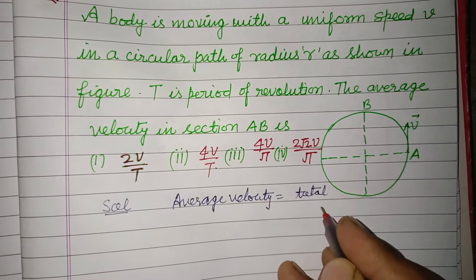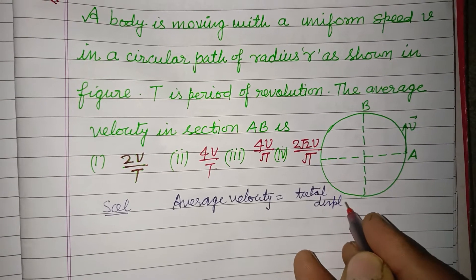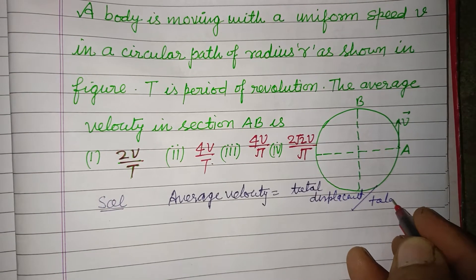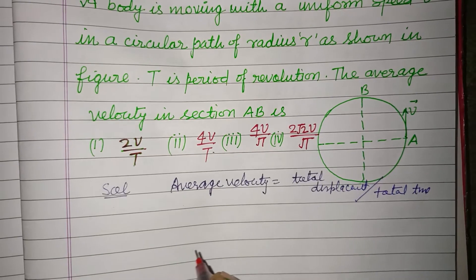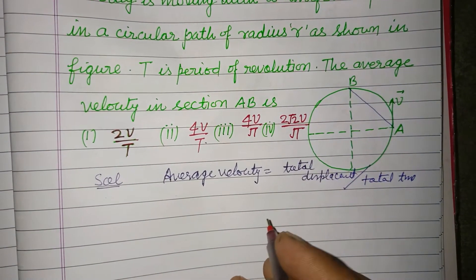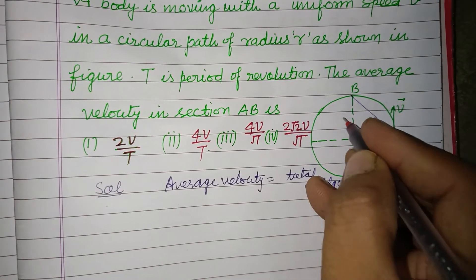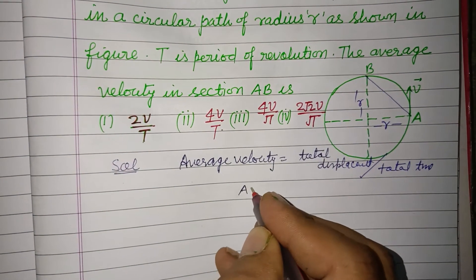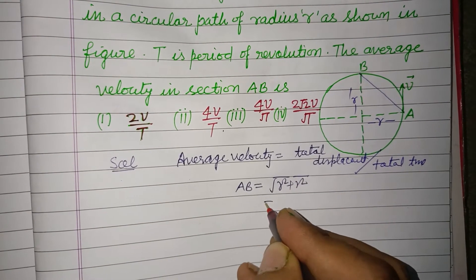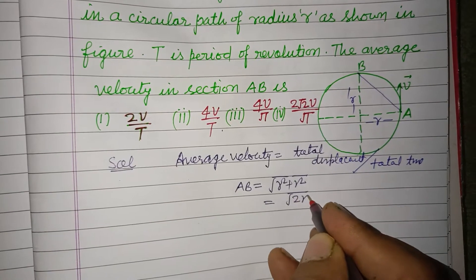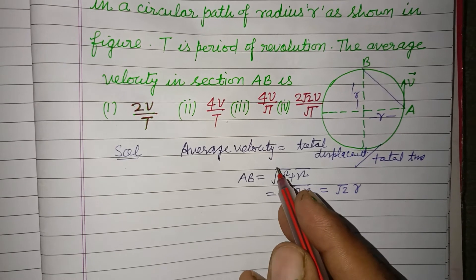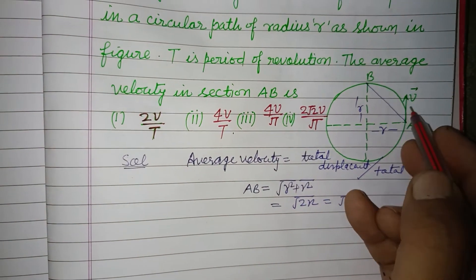Here displacement required from A to B. So we find AB. This is R, this is also R. Then AB equals under root R squared plus R squared, that is 2R squared, or under root 2R. This is the total displacement and time.